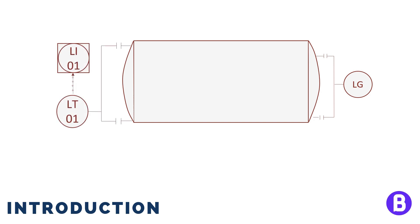However, if this level glass was a level transmitter, this means that it shall be connected to the control system, which is the DCS, or distributed control system. This means that the operator can see the level reading from the control room.